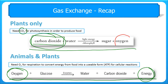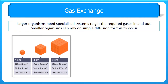Plants produce oxygen that they can remove. And both plants and animals produce waste carbon dioxide that they also need to exchange and remove after it has been produced. In this video, we're going to go into a bit of detail about some of the specialised systems that organisms have in order to facilitate this gaseous exchange.